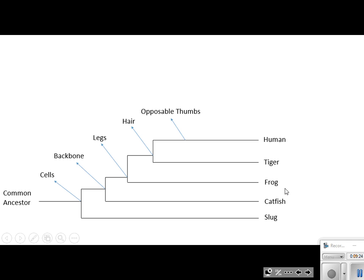Now, what's going to be more closely related? A slug, a frog, or a human? Which ones are more closely related? Probably going to be the frog and the human. Why is that? Because they have more things in common. Does a slug have a backbone? No. Does a human? Yes. Does a slug have legs? No. Does a human? Yes. So, that's why they're going to be more related. The only thing that the frog and the slug have in common is what? Cells.